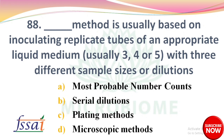DASH method is usually based on inoculating replicate tubes of an appropriate liquid medium — usually 3, 4, or 5 — with 3 different sample sizes or dilutions. Options: A) Most Probable Number count, B) Serial dilutions, C) Plating methods, D) Microscopic methods. The right answer is option A: Most Probable Number (MPN) count.